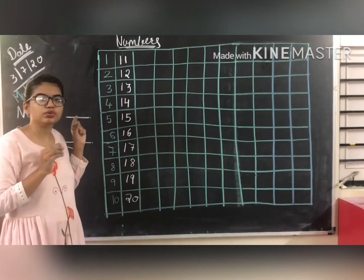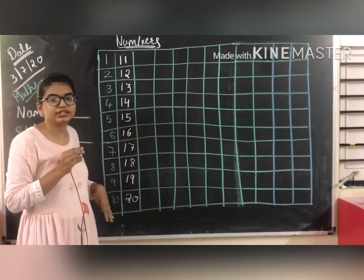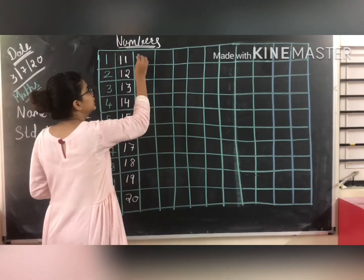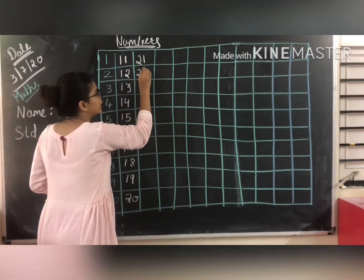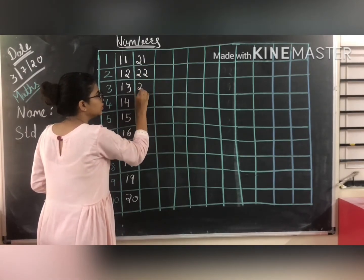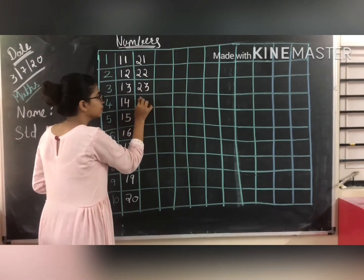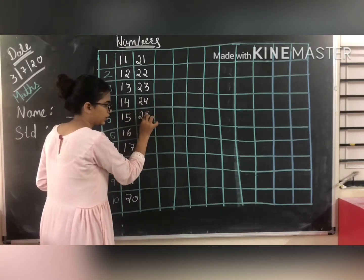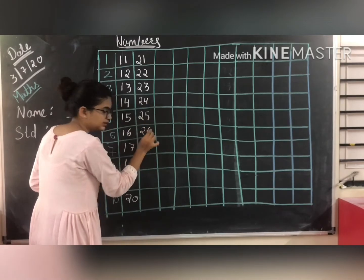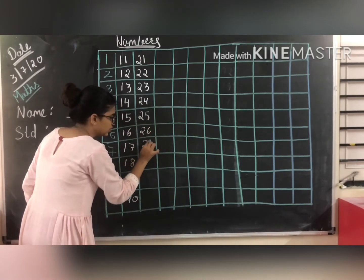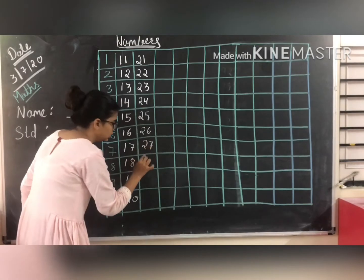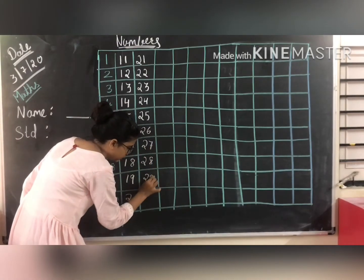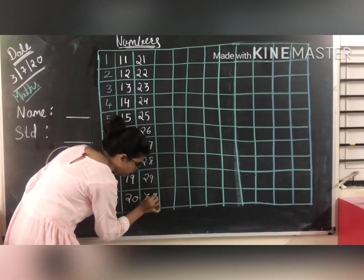So students, you don't have to only watch — you have to also write in your CW. After 20, the digits come: 21, 22, 23, 24, 25, 26, 27, 28, 29, and 30.